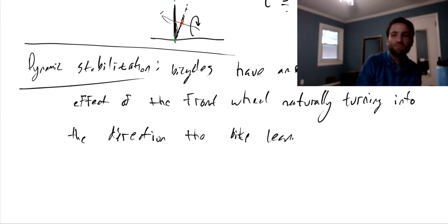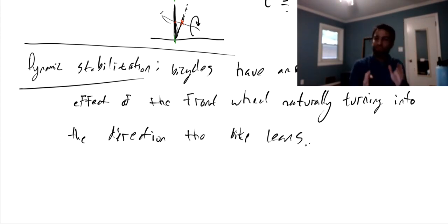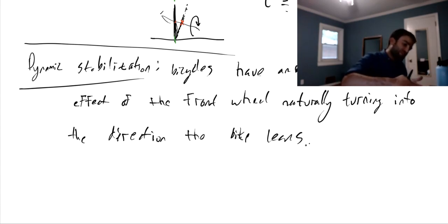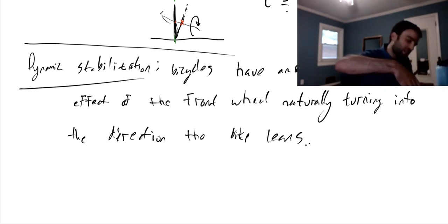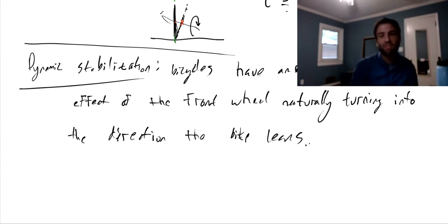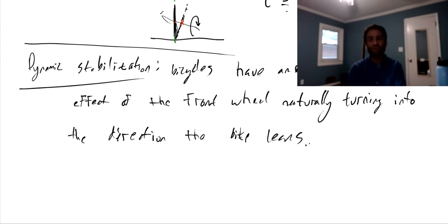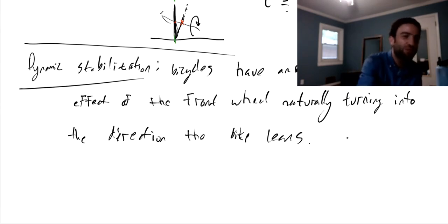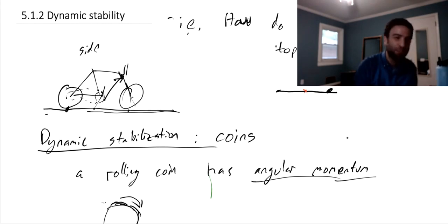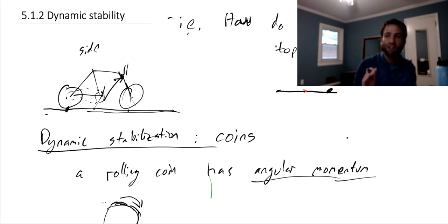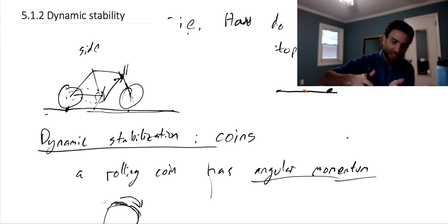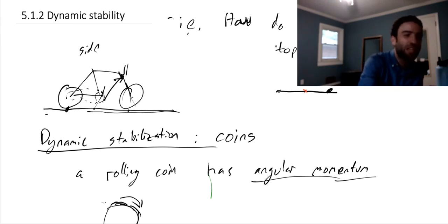So bicycles have an additional effect of the front wheel naturally turning into the direction the bicycle leans as it moves forward. You have another form of steering in the direction of your lean - you lean, you're starting to fall over, but then you turn in that direction, and by moving forward fast enough, you bring the center of mass back above the base of support - that single line. That forms the essence of why bicycles can be dynamically stable even though they're not statically stable, with two natural forms of self-stabilization by turning into the direction of their lean.